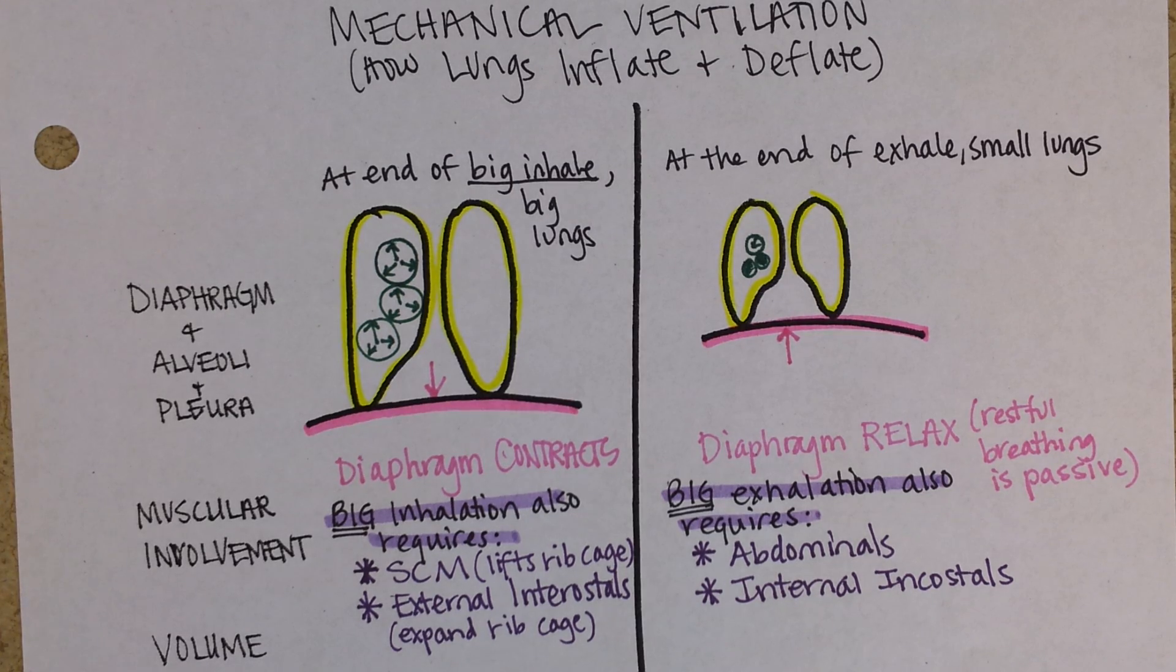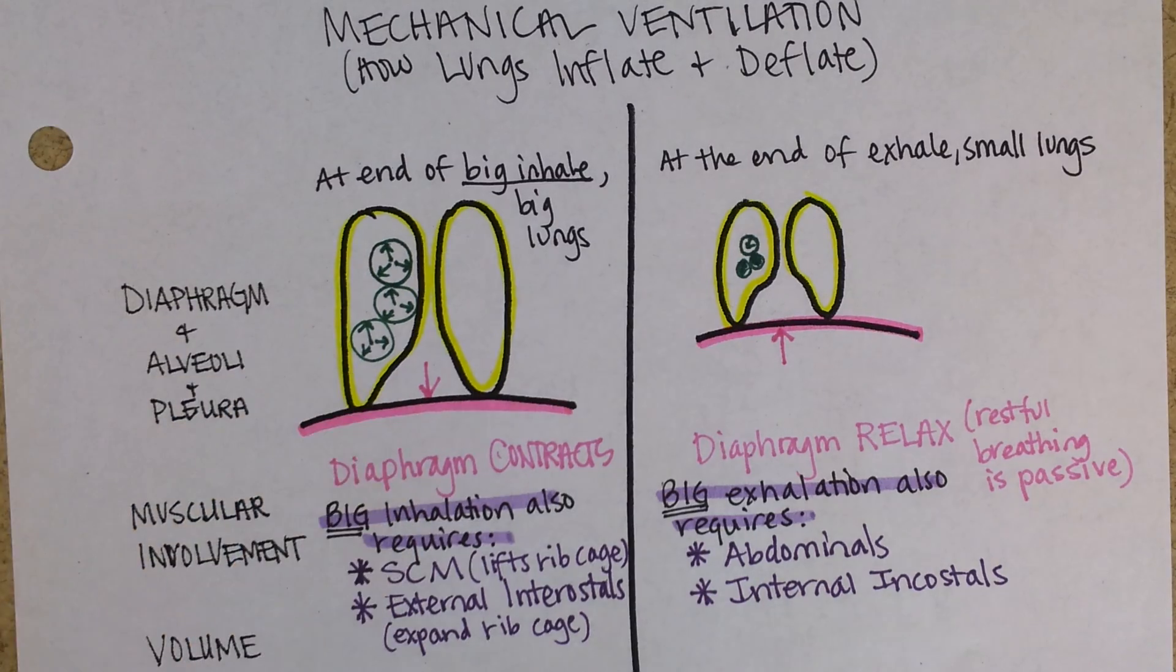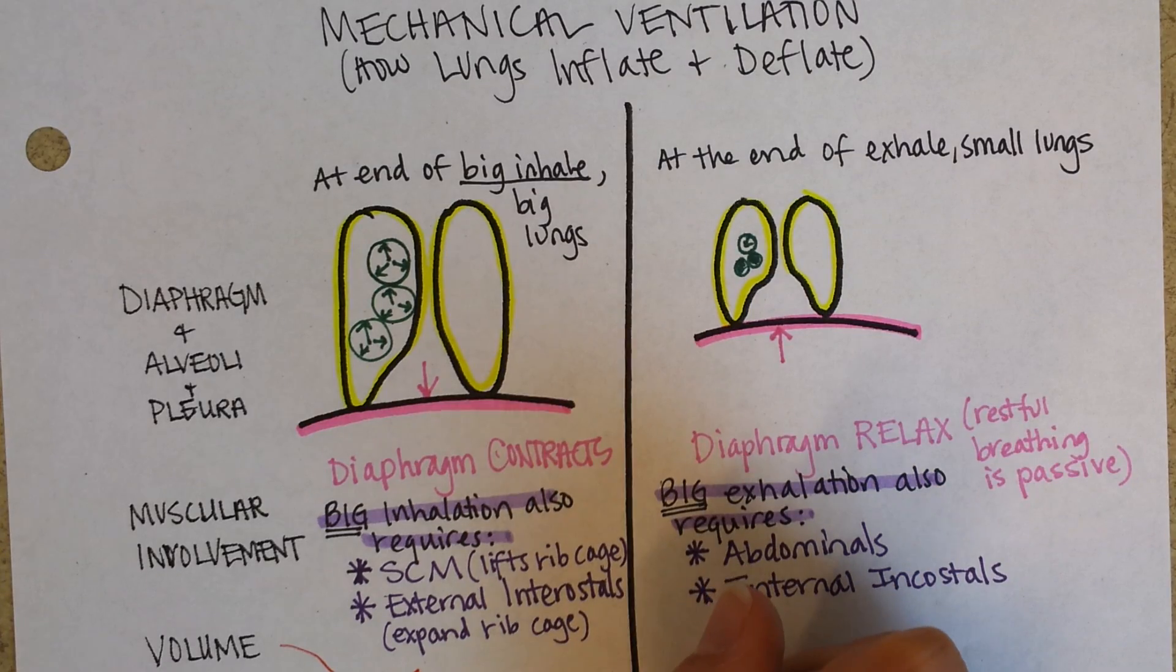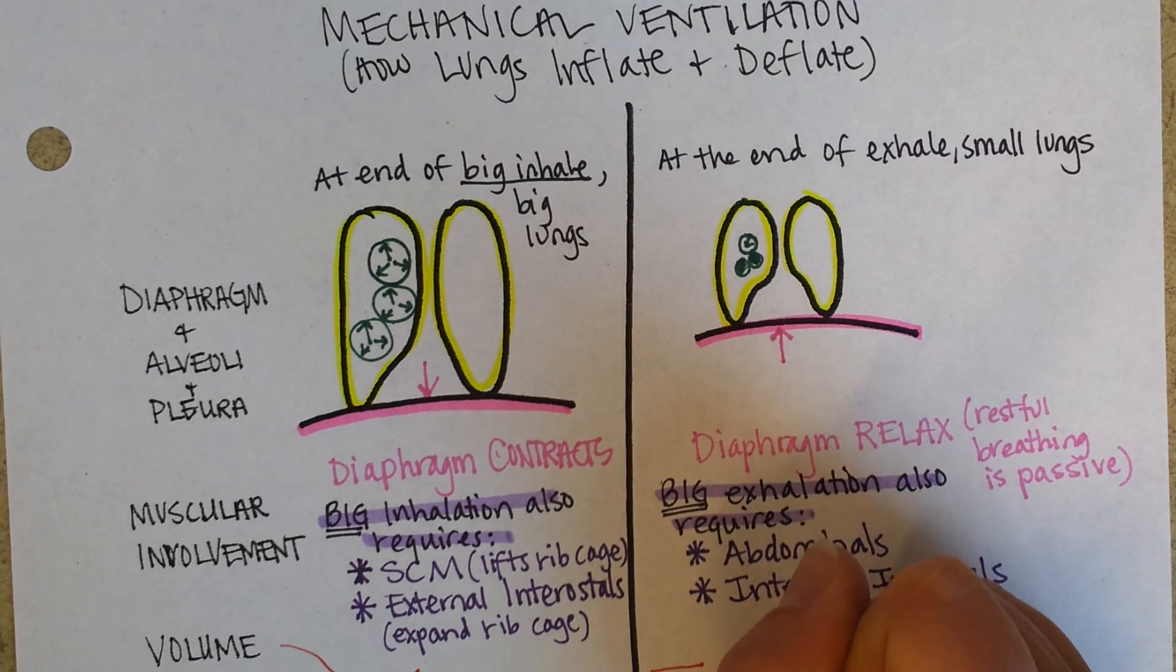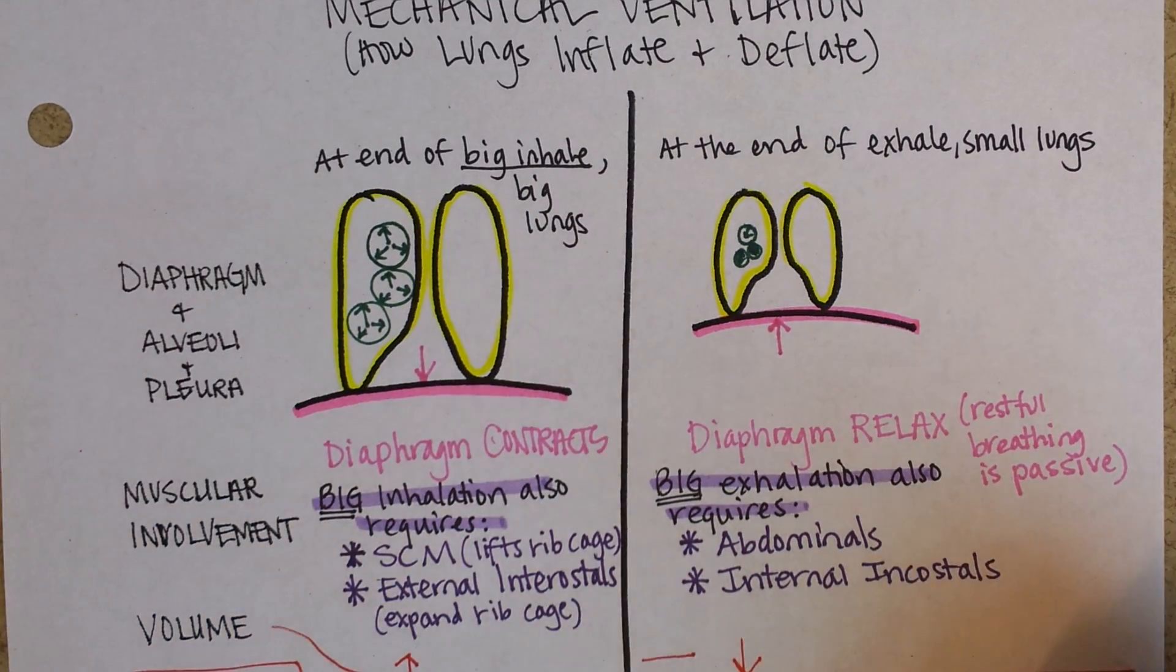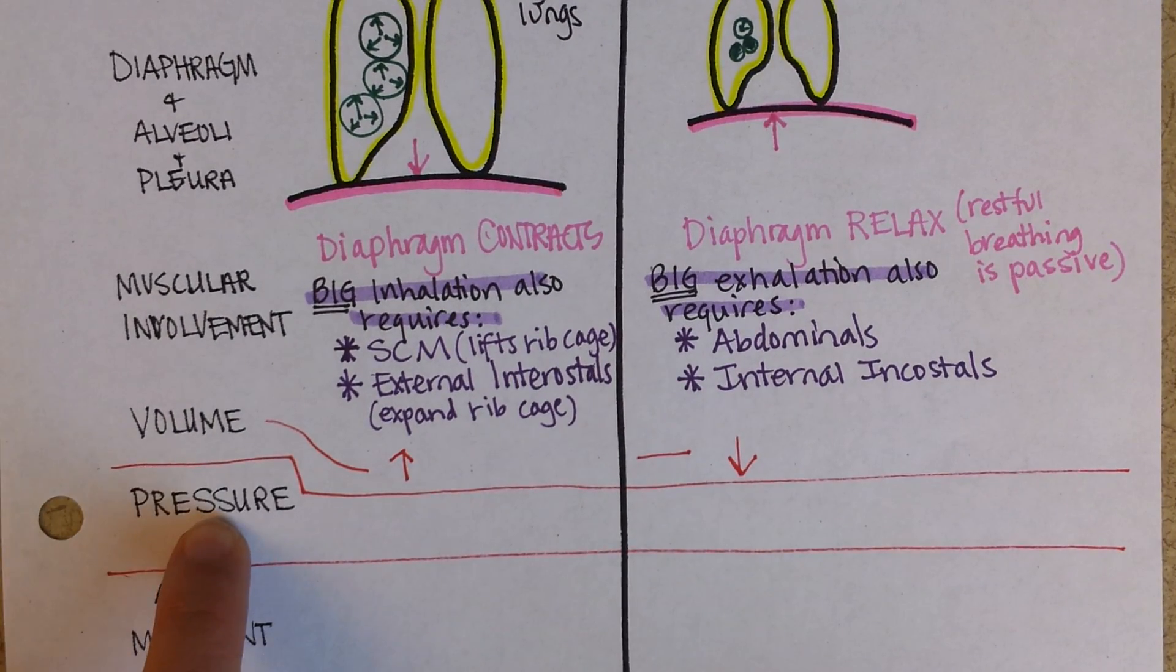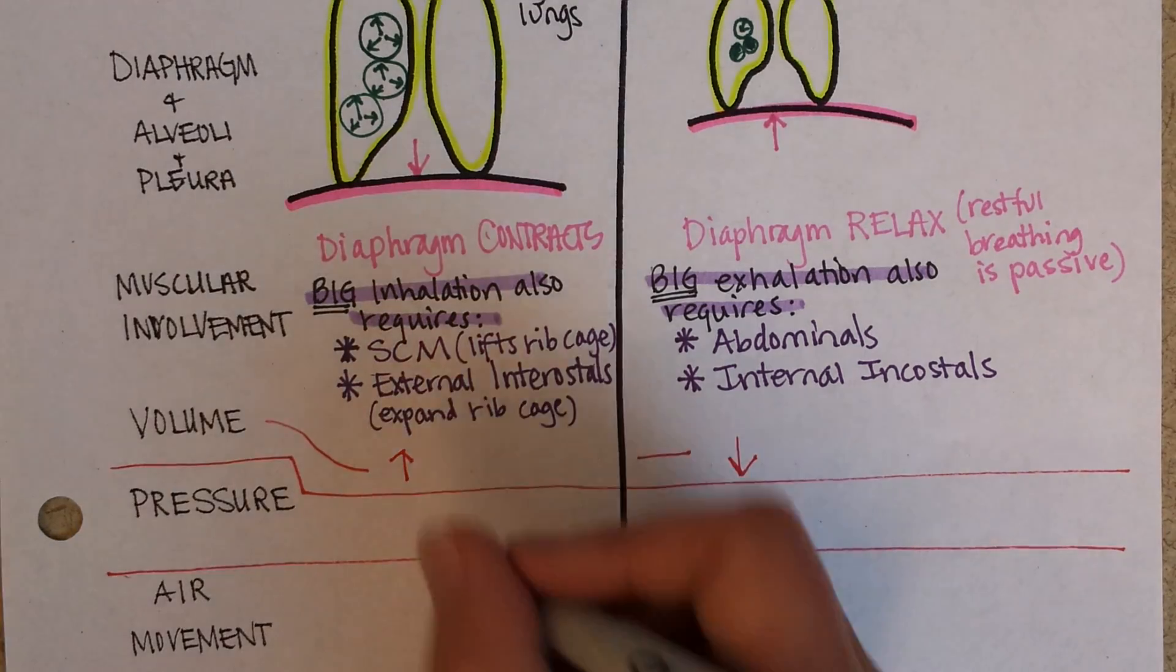Now when the lungs expand, the volume goes up. And when the lungs get smaller, the volume goes down. So you know that when volume gets smaller, pressure goes up. So if volume gets bigger, then pressure goes down.